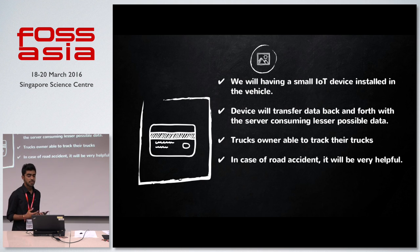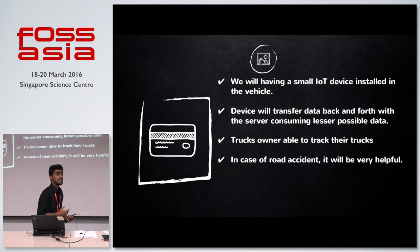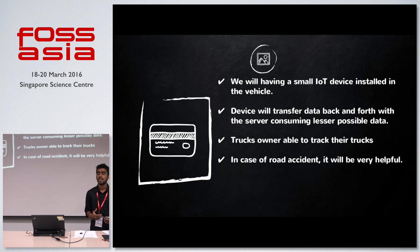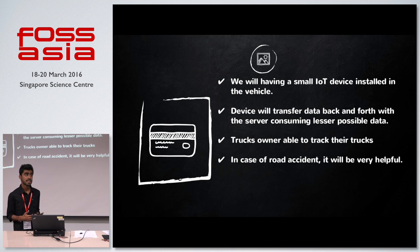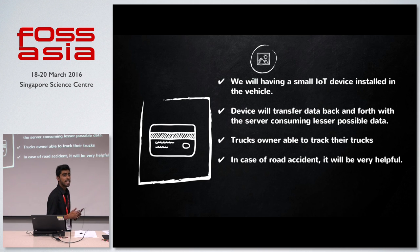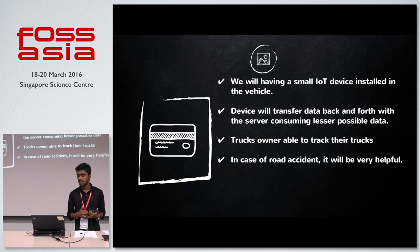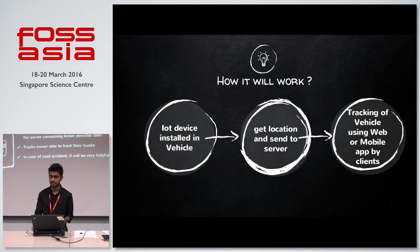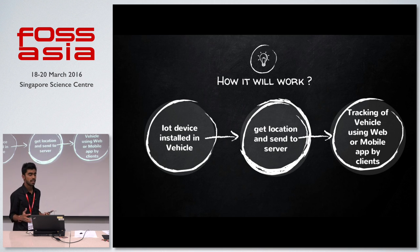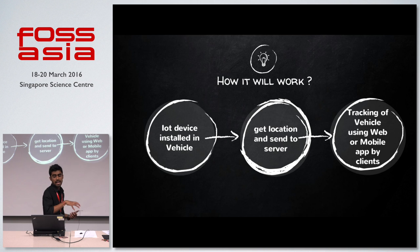This is exactly where our IoT platform steps in. We'll have an IoT device installed in the vehicle that transfers data back and forth to the server, consuming the least possible mobile data. Truck owners will be able to track their trucks, and in the case of an accident, we can directly contact the nearest emergency services.